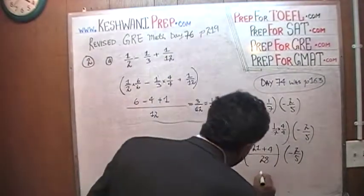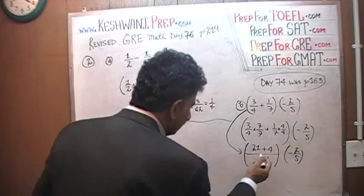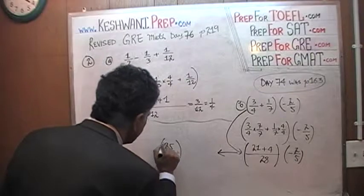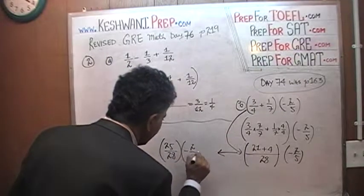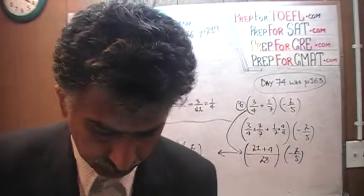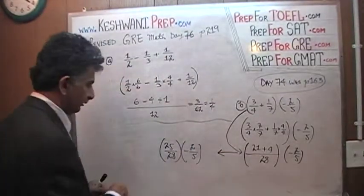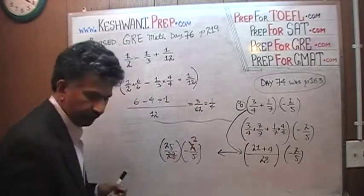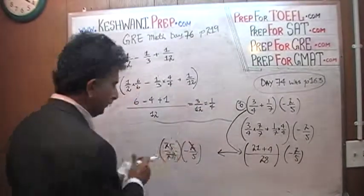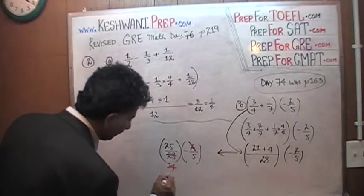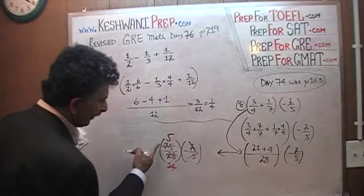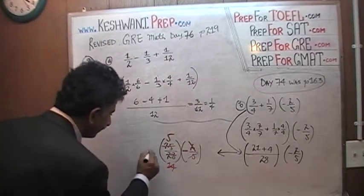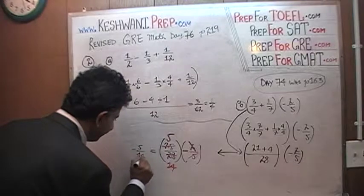21 plus 4 is 25, so we have 25 over 28 times negative 2 over 5. Now we simplify before multiplying out. I see 28 and 2 — dividing both by 2 gives 14 and 1. I see 25 and 5 — dividing both by 5 gives 5 and 1. So it's negative 5 over 14. Negative five fourteenths is the answer for B.